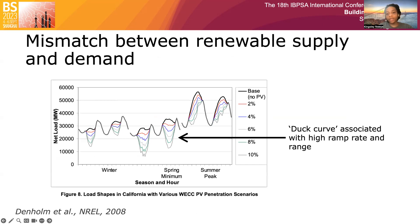However, while electrification might reduce emissions on the building side, it would also mean increased emissions and load on the supply side if the power generated from renewables is not able to meet up with increased electricity demand. More importantly, renewable power generation has a temporal dimension in the sense that it is not always available and is affected by weather conditions, as shown by the duck curve.